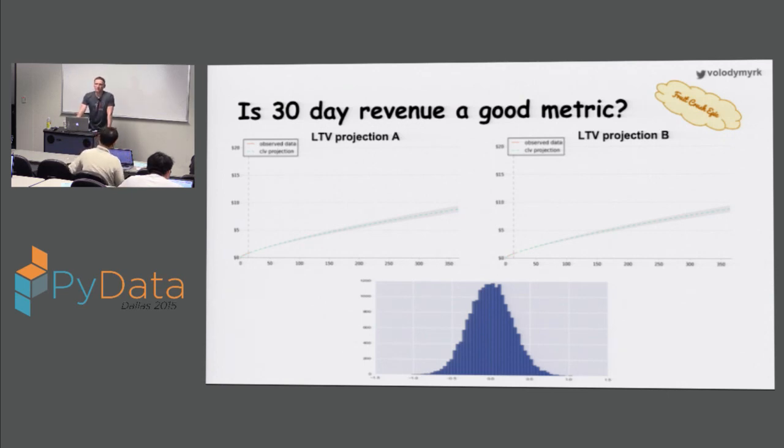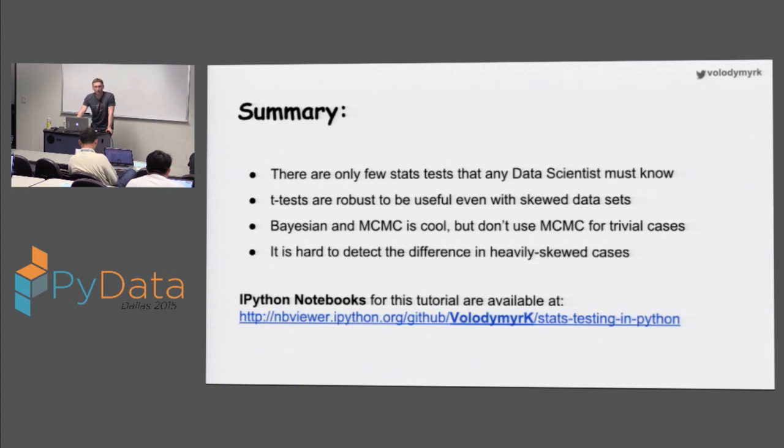So we do calculate, we do project long-term lifetime values and we calculate the difference. However, putting a significance interval on top of those calculations that are internally based on the stochastic model is actually really tricky. So, summary. If you know basic stats, you can actually analyze a lot of A-B tests, so there's not a lot of statistical tests that you actually need to know. T-tests are robust enough if you have large data. However, if you don't have lots of data or if you're not sure whether you can apply t-tests, you can easily simulate null hypothesis using sampling. And Python, and numpy arrays, it's easy to implement those techniques.